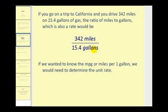If we want to know the miles per gallon or miles per one gallon, we would determine the unit rate. So we would want to rewrite this rate with a denominator of one gallon. So if we were to take 15.4 gallons and divide by 15.4, that would give us one gallon.